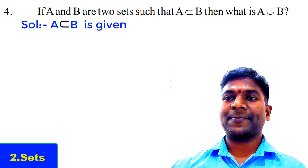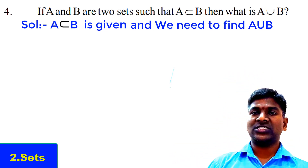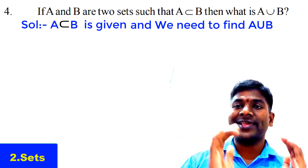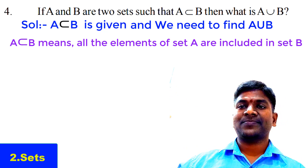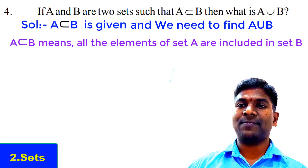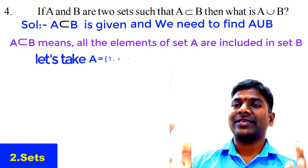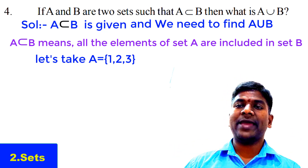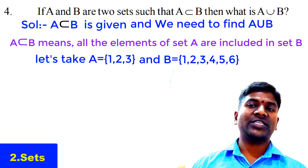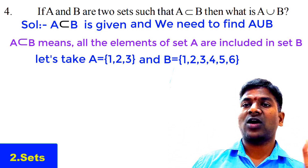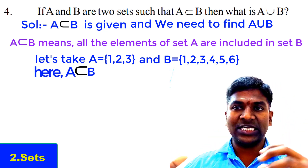Here A ⊆ B is the condition and we have to find A union B. A ⊆ B means A is a subset of B — all the elements of A should be in B, and B may be the bigger set. As an example, let Set A = {1, 2, 3} and Set B = {1, 2, 3, 4, 5, 6}. Observing these two sets, all elements 1, 2, 3 of Set A are in B also, so clearly A ⊆ B.